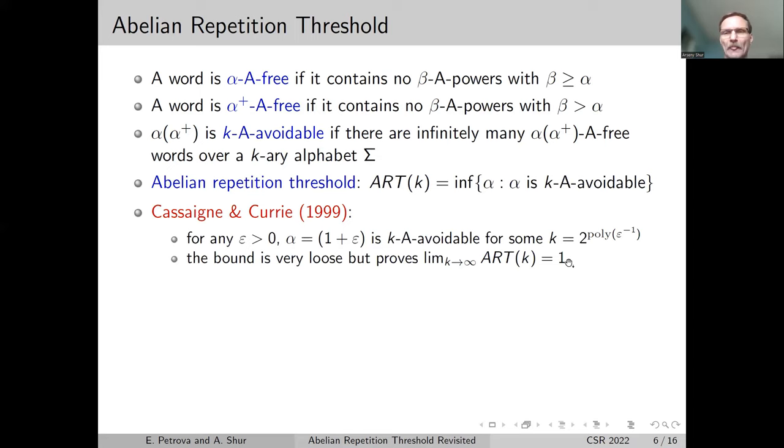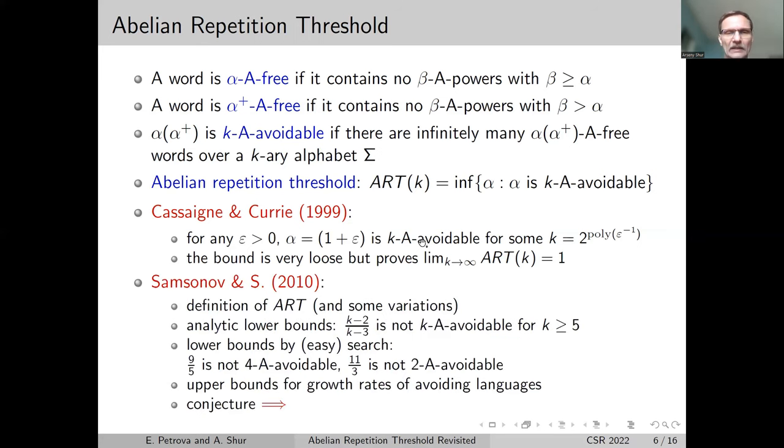An earlier result by Cassaigne and Currie says that the limit of ART(k) as k approaches infinity is one. In fact, any abelian exponent greater than one can be avoided over some big alphabet, but the bound on the number of letters is really huge. For example, for ε equal to one half, they need more than 100 billion letters, and it's supposed that six letters is sufficient.